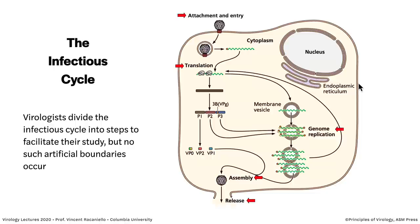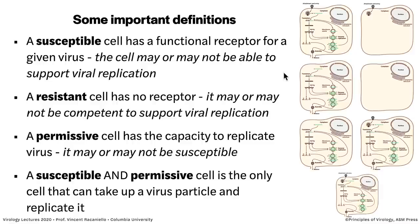Sometimes it's called the reproduction cycle — same thing, synonymous. Virologists divide this into steps just to make it easier to study them. We talk about attachment and entry of viruses to receptors, macromolecular processes like translation and genome replication, and assembly and release. We actually have lectures in this course based on these divisions. The purpose of dividing it is so we can study them. This is a replication cycle of a very specific virus happening all in the cytoplasm, but many viruses are also in the nucleus as well, as you will learn.